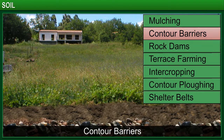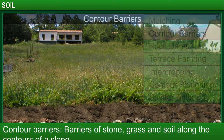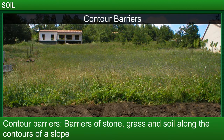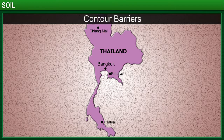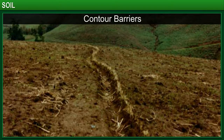Contour barriers refer to barriers of stone, grass and soil built along the contour lines of a slope. Trenches are built in front of the barriers to collect water and prevent it from flowing down the contours and washing away the soil. Many farmers in northern Thailand have used this method to conserve soil, as the area has steep slopes that are prone to soil erosion.